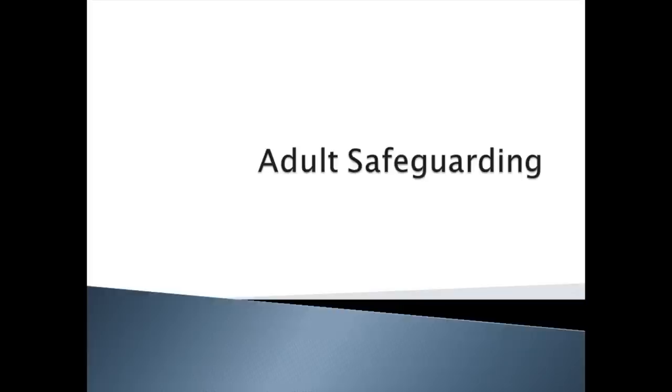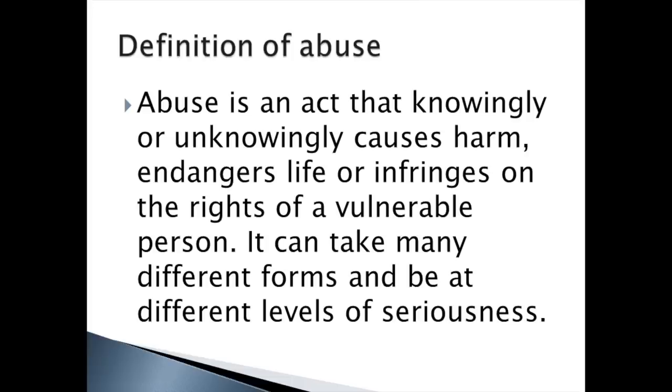Adult Safeguarding. We'll begin with the definition of abuse. Abuse is an act that knowingly or unknowingly causes harm, endangers life, or infringes on the rights of a vulnerable person. It can take many different forms and be at different levels of seriousness.